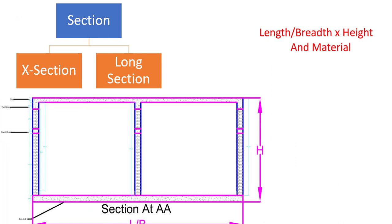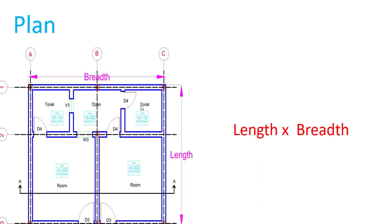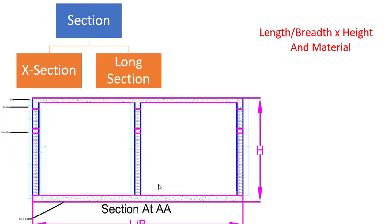In this cross section example, you can see a wall where we can get the breadth and height, as well as the material — for instance, brick. At one level we have lintel beams, at the top level we have a top beam and slab. So we can get material information from the section. If we cut along the length, it is called a long section, and from it we get length and height.